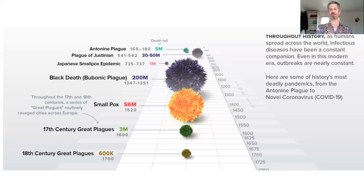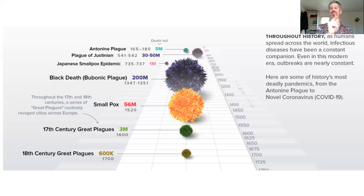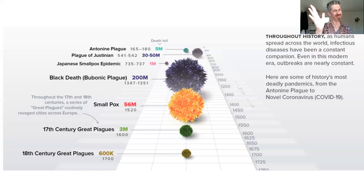We believe the Black Death emerged in Central Asia, spread into China, then traveled the trade routes established by the Mongols, reaching the Crimean Peninsula. From there, infected rats went on boats heading towards the Italian Peninsula, where it reached the mainland. From the Italian Peninsula, it spread throughout Europe. At the same time, along the Mongol trade routes through the Middle East, it caused mass death and mayhem. Italy's population disproportionately suffered, but mass death occurred throughout.